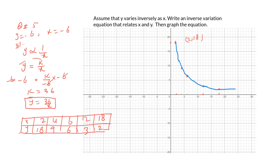Pause the video and plot the negative points. Take negative x values like negative 2, negative 4, negative 6, negative 12, and negative 18. The corresponding y values will be negative 18, negative 9, negative 6, negative 3, and negative 2. Plot these points in the third quadrant and connect them all. Hope it makes sense!